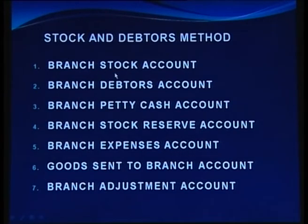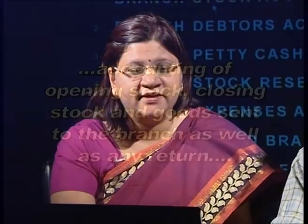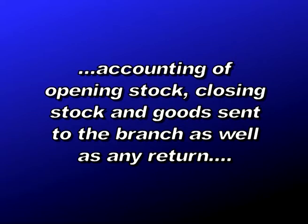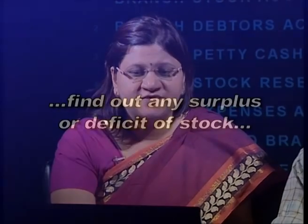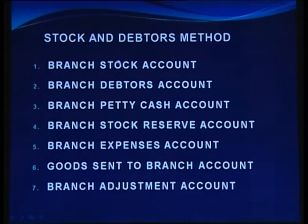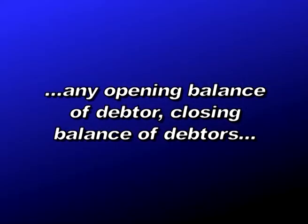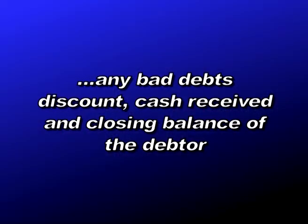The branch stock account records opening stock, closing stock, goods sent to the branch, and any returns either by the debtor directly to the head office or by the branch. We also find any surplus or deficit of stock under this account. The branch debtors account records the opening balance, credit sales on the debit side, and on the credit side: bad debts, discount, cash receipts, and the closing balance of debtors.